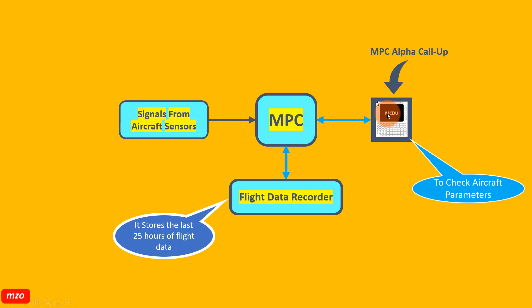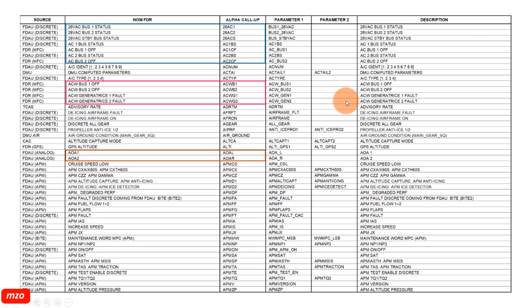I will show you this tutorial on the rear aircraft. This is the aircraft parameter and according to the ADR-72, there are a lot of parameters. This is just the 8th bit. Now let's go.